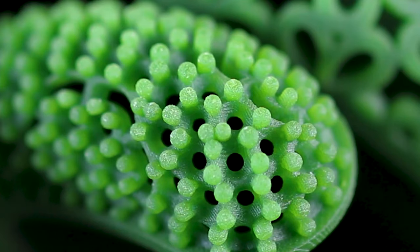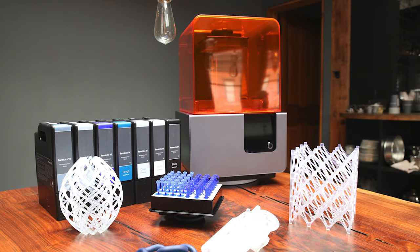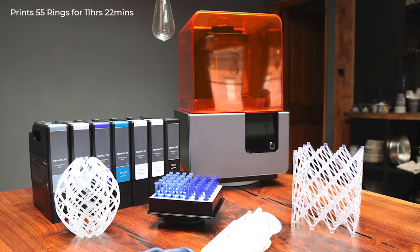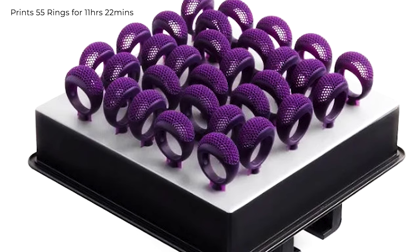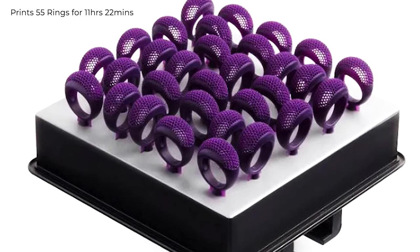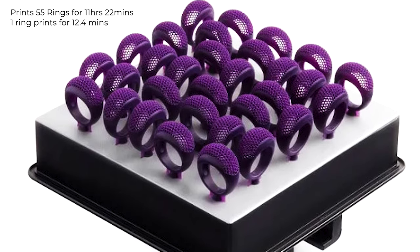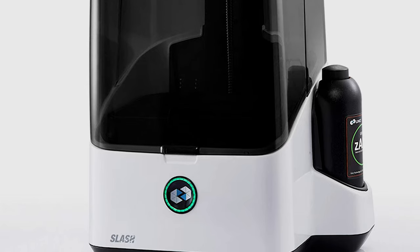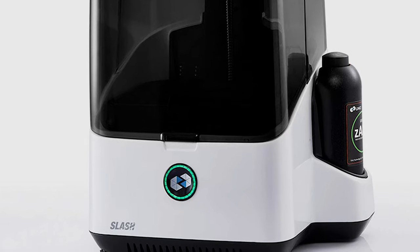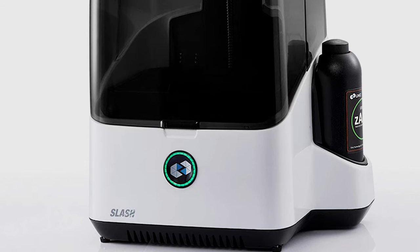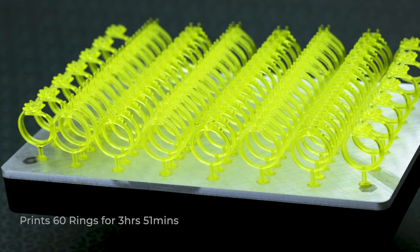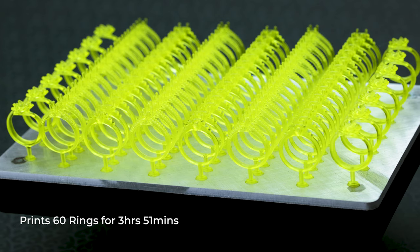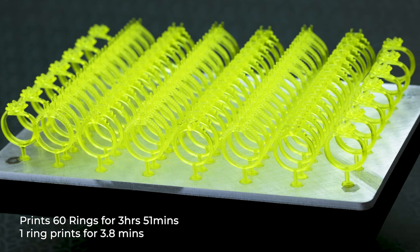Let's look at some numbers. The Form 2 SLA 3D printer takes about 11 hours and 22 minutes to print 55 ring models. This means that each ring prints in 12.4 minutes. Compare that to the Uniz Slash Plus 3D printer, which is based on DLP technology. This printer only takes 3 hours and 51 minutes to print 60 rings. Basically, each ring is printed in just 3.8 minutes.